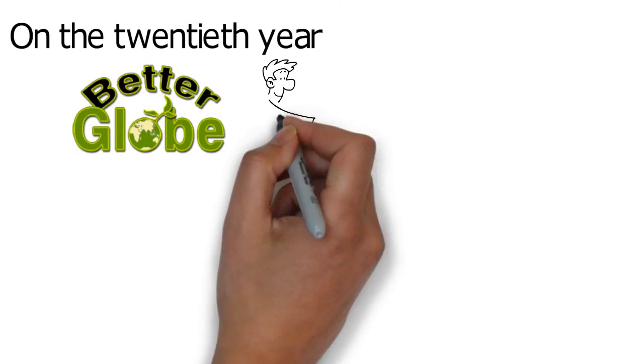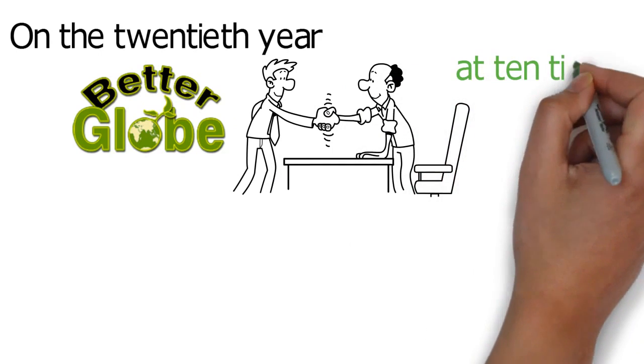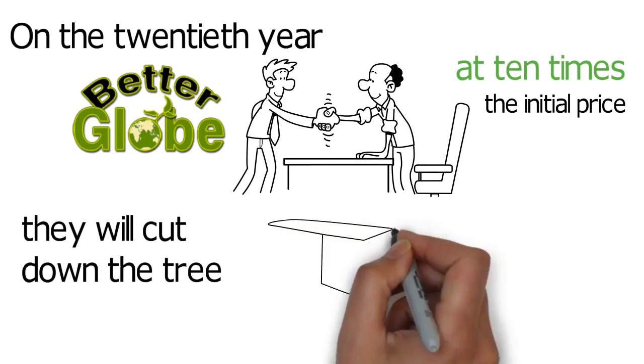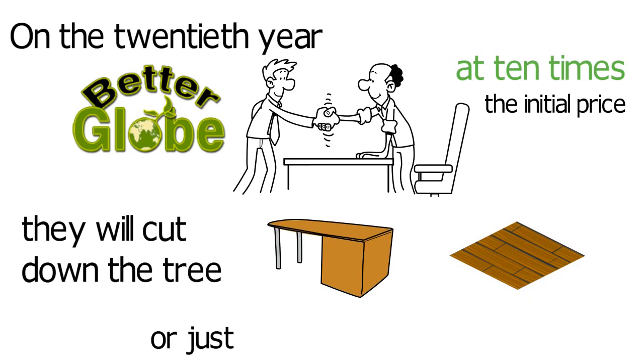On the 20th year, Better Globe will buy back the trees from you at 10 times the initial price. Then, they will cut down the tree and make furniture, parquet floors, or just sell it on the open market.